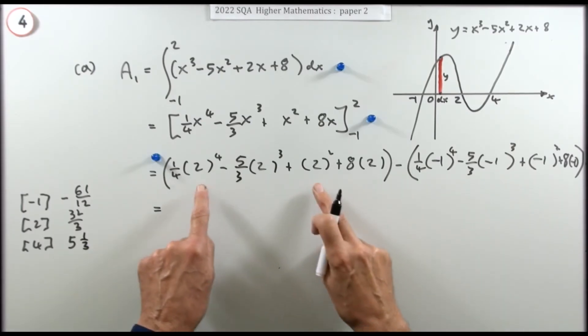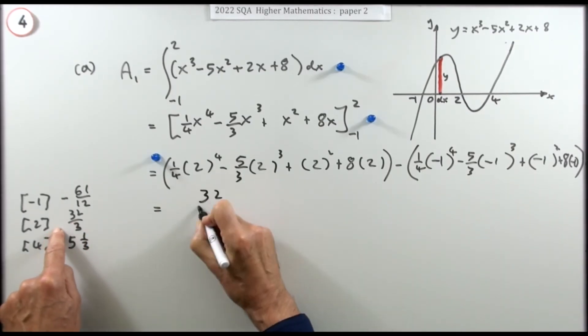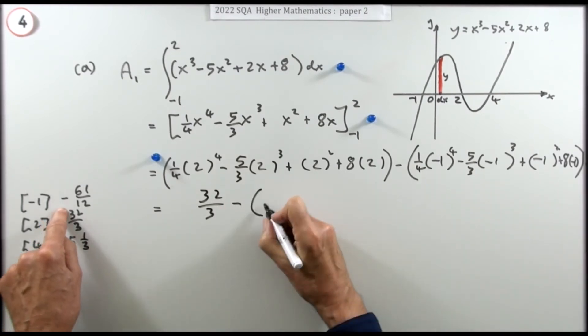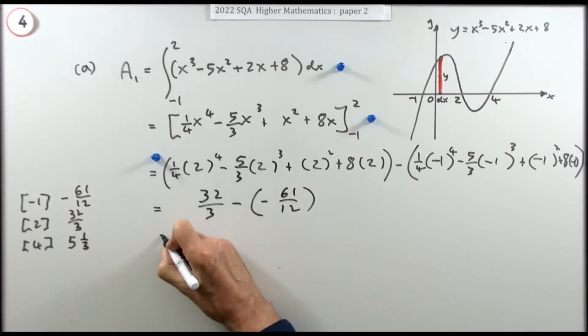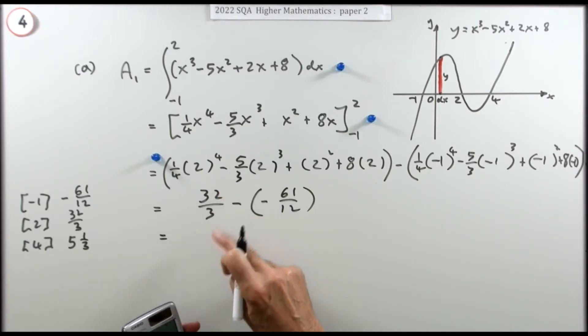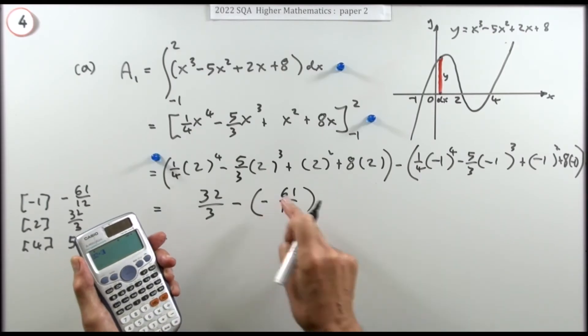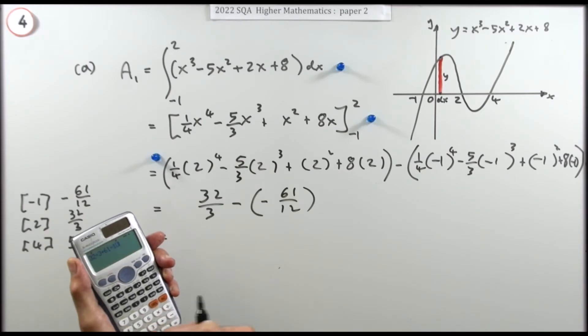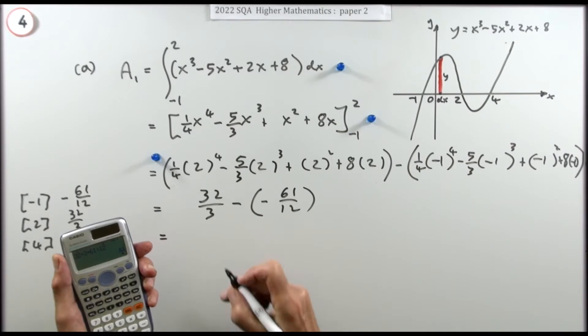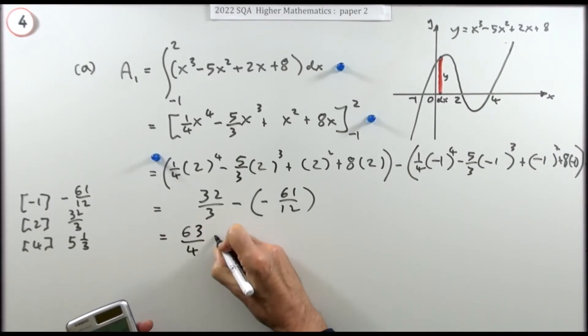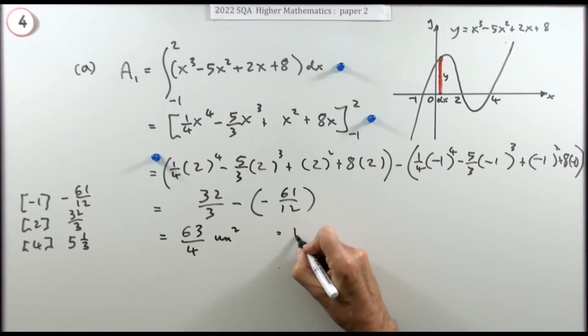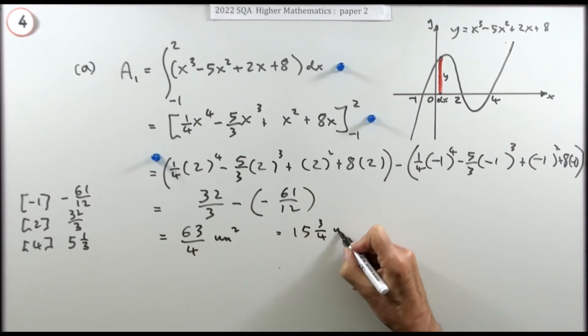So for this first part, what's the answer at 2? It was 32 upon 3. Minus, what was the answer at negative 1? It was negative 61 upon 12. Now you finish that. You can either do that just by multiplying them both by 4 and then doing add on 61. Or you could just do it as 32 divided by 3 plus 61 divided by 12, and you get 63 upon 4. Units squared. Or you could call that 15, that's 1, 2, 3 with 3 left over, 15 and 3 quarters or 0.75 units squared. Just leave it like that. That's the last mark.